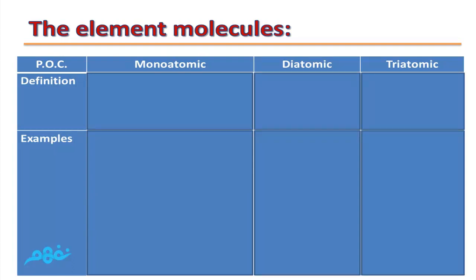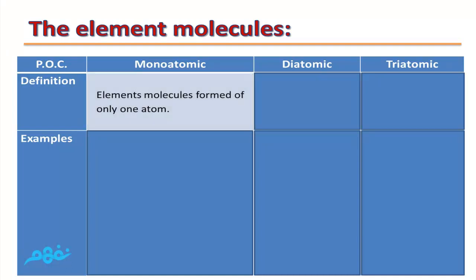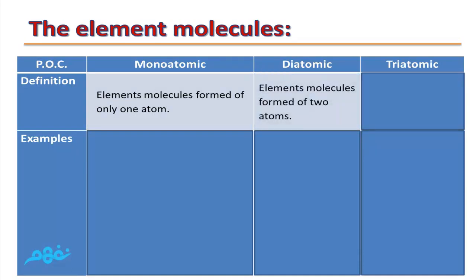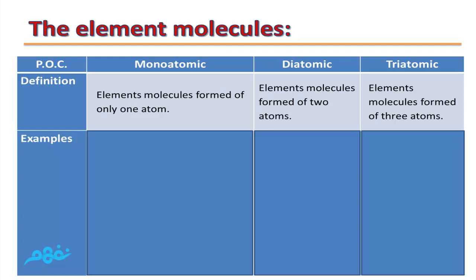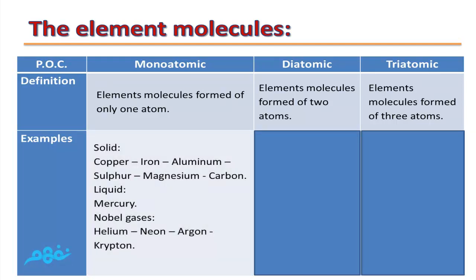Let's compare between the three types of element molecules. Monoatomic: element molecules formed of only one atom. Diatomic: element molecules formed of two atoms. Triatomic: element molecules formed of three atoms. Examples for monoatomic elements — solids such as copper, iron, aluminium, sulfur, magnesium, carbon; liquid such as mercury. Mercury is considered the only monoatomic liquid element. All noble gases are monoatomic, such as helium, neon, argon, krypton, xenon, and radon.